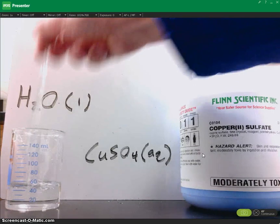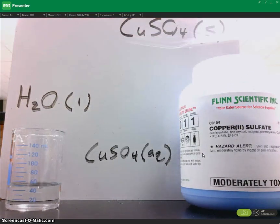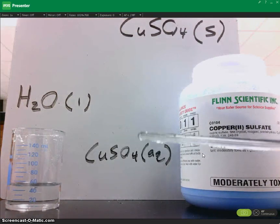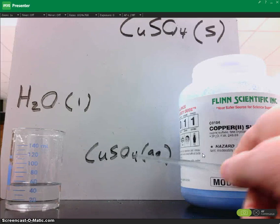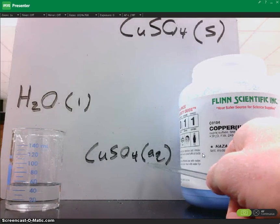Now the copper(II) sulfate has dissolved. Anytime something is dissolved in water, the phase notation is AQ. That's a brief overview of phase notation.